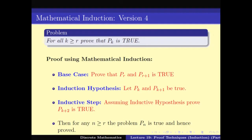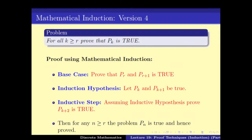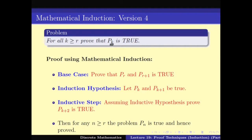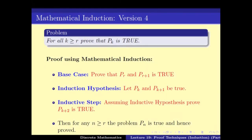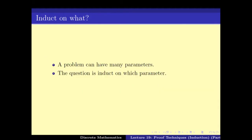In all of these versions we have assumed that we induct on k in the sense that k is increasing - we prove for k, then k+1, or k implies k+1, and so on. But sometimes we might have problems where there are multiple variables, meaning multiple parameters. In that case, which parameter do you induct on? Can you induct on multiple parameters at the same time? Let us look at an example.